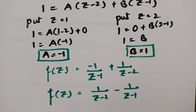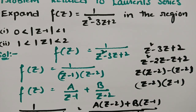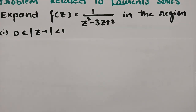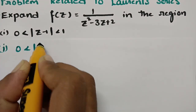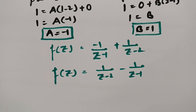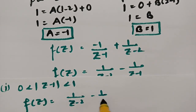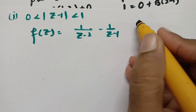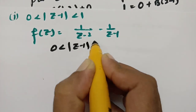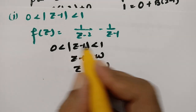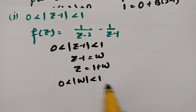For the first condition, 0 < |z - 1| < 1, f(z) = 1/(z - 2) - 1/(z - 1). Let w = z - 1, so z = 1 + w. The condition becomes 0 < |w| < 1. This represents the region between a point circle at 0 and a circle of radius 1.